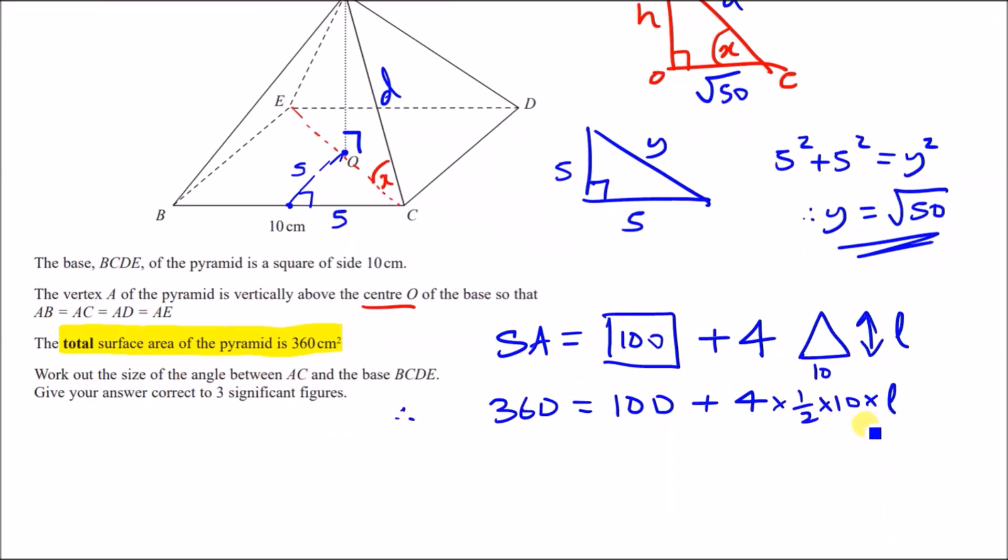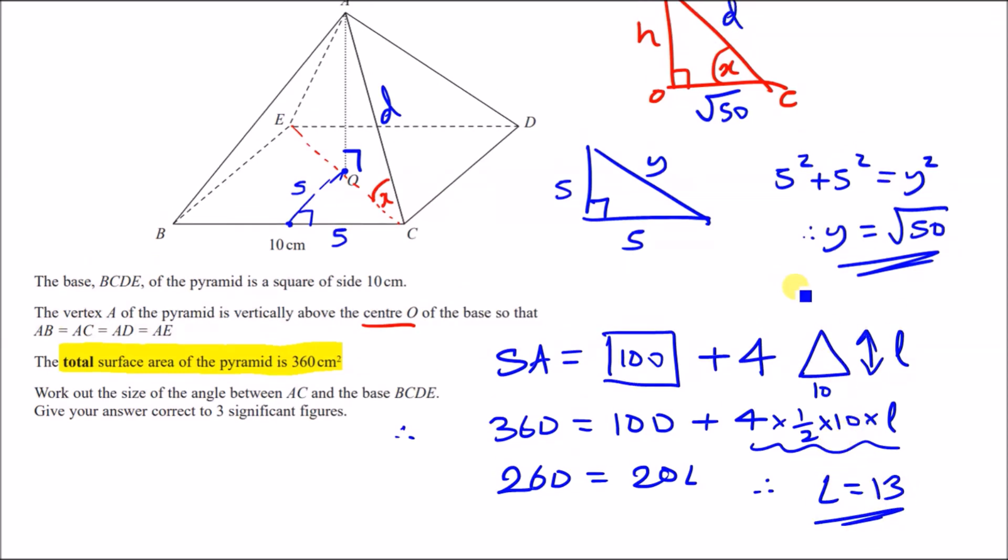Next, to work out the value D, we can start using the final piece of information, which is the fact that the total surface area is 360. So what is this total surface area? Well, we know that it consists of a square on its base, which has an area of 100, because 10 times 10 is 100, plus we've got four triangles. And we know that it has a base of 10, but we don't know its height. Let's call this height L.